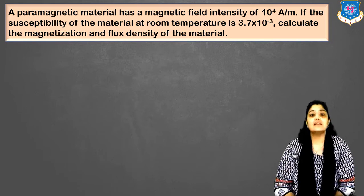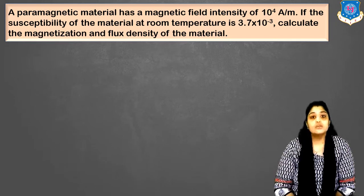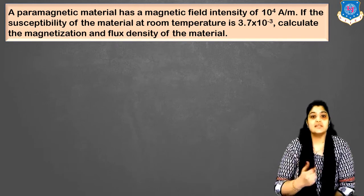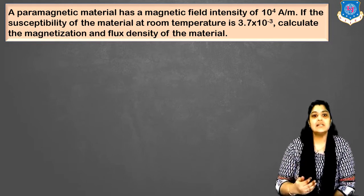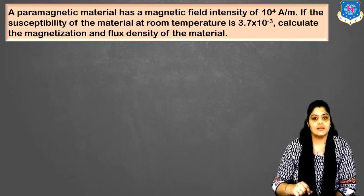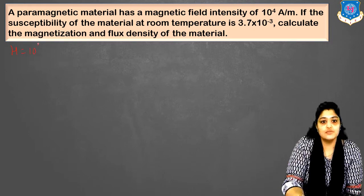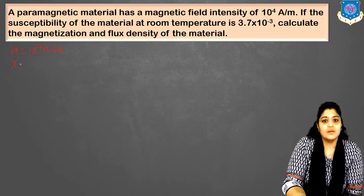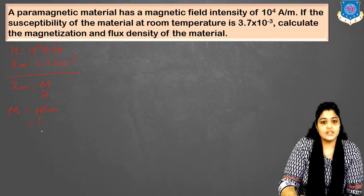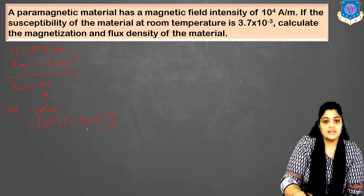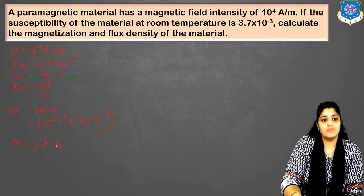You are given H equals 10 raised to 4 ampere per meter and chi_m equals 3.7 into 10 raised to minus 3 (chi_m is a unitless quantity). We know chi_m equals M by H, so M equals H into chi_m. Substituting: M equals 10 raised to 4 multiplied by 3.7 into 10 raised to minus 3, which gives M equals 37 ampere per meter.